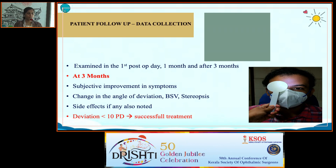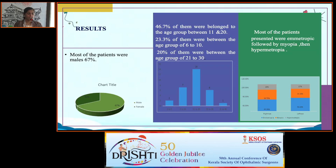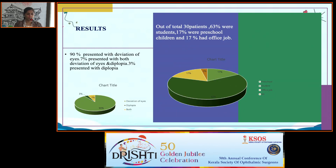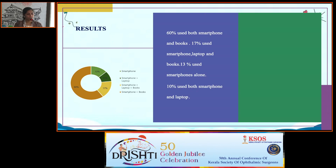Patients were followed at post-operative day one, one month, and three months. At three months, subjective symptom improvement, change in deviation angle, best corrected visual acuity, stereopsis, and side effects were assessed. Treatment was considered successful if deviation was less than 10 prism diopters. Results: 67% were male; 46.7% were in the 11–20 age group. Most patients were emmetropic, followed by myopia and hypermetropia. 90% presented with deviation; 63% were students, 17% preschool children, and 17% had office jobs.